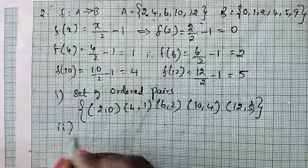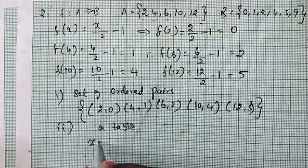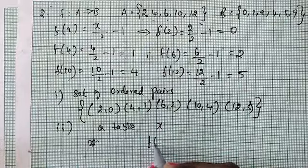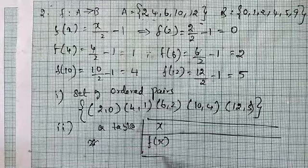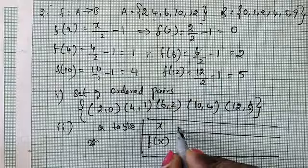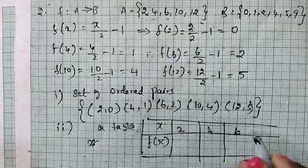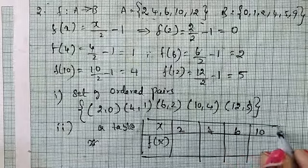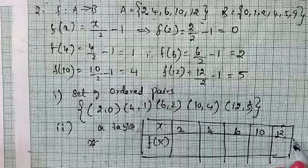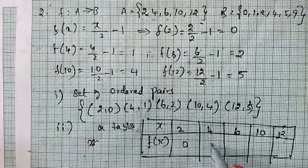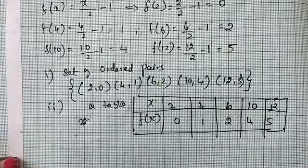Next, second one table. Here x and f(x). Table: x values are 2, 4, 6, 10, and 12. f(x) values are 0, 1, 2, 4, 5. Table complete.